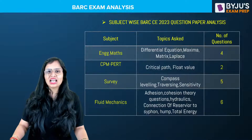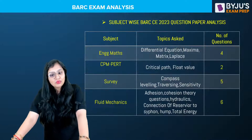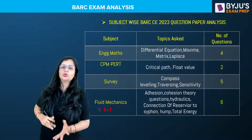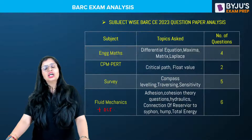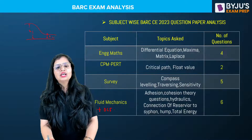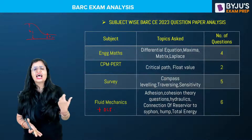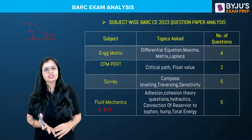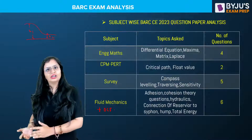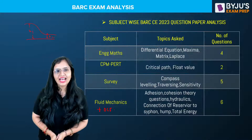For Survey, questions on compass, leveling, traversing, and sensitivity were there — approximately four to five questions. For Fluid Mechanics, including Open Channel Flow (OCF), two questions were from OCF: one related to a hump, and one where energy head and other values were given and you had to apply total energy on both sides. Questions on adhesion theories and critical energy were also there. The hump question was lengthy, so many students could not complete it due to shortage of time — the calculation was lengthy even though the concept was simple.